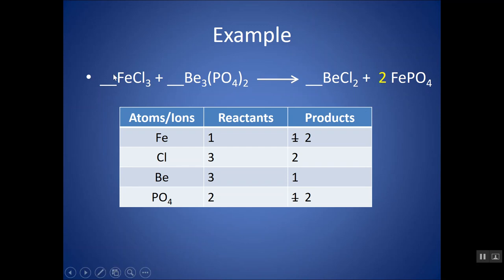Now I have two irons, so I need two irons on this side. Now I have six chlorines on this side, so I need six chlorines on this side. I'll put a three, and that balances my Be's. You can start in a different place than I started with, and you should arrive at the same answer.